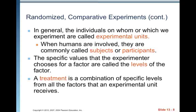The experimenter then observes the response variable and compares responses for different groups of subjects who have been treated differently. In general, the individuals on whom we experiment are called experimental units. When humans are involved, they are commonly called subjects or participants. The specific values that the experimenter chooses for a factor are called the levels of the factor. A treatment is a combination of specific levels from all factors that an experimental unit receives.